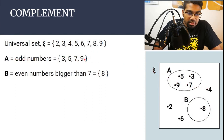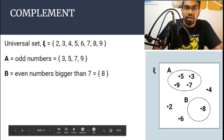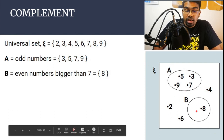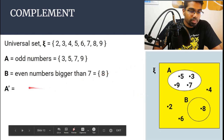Everything else — the elements that don't belong to set A or set B but are still in the universal set — we put outside. This is our universal set consisting of set A, set B, and those other elements as well.